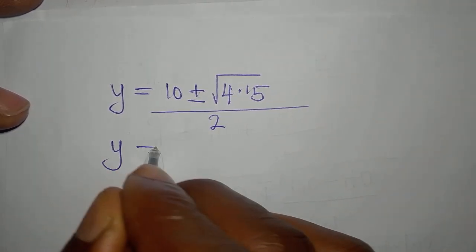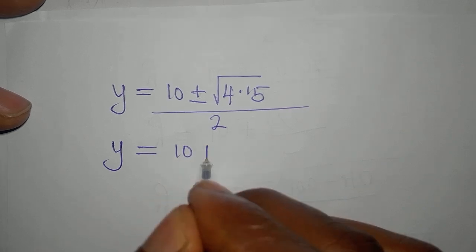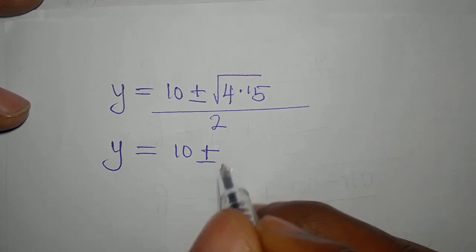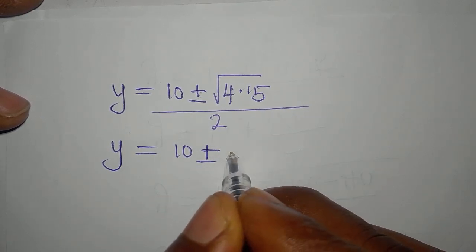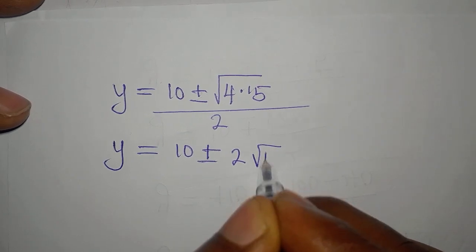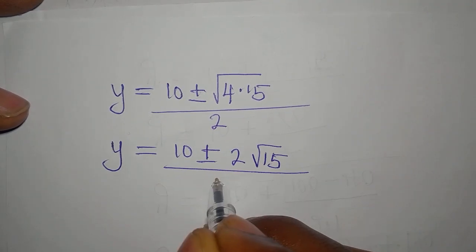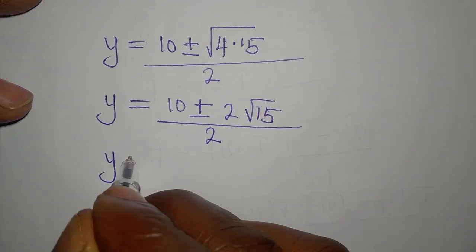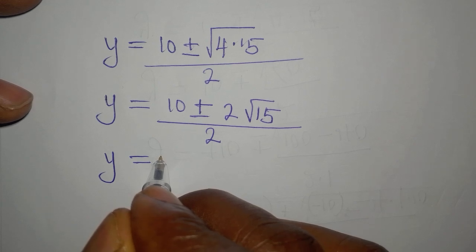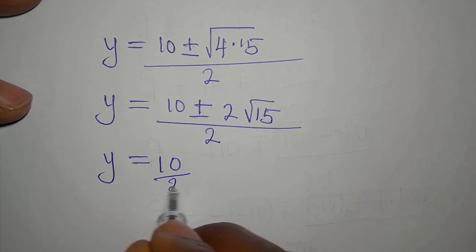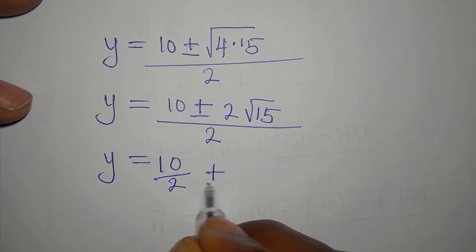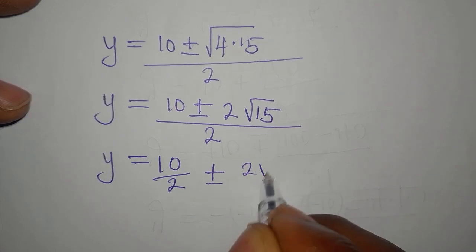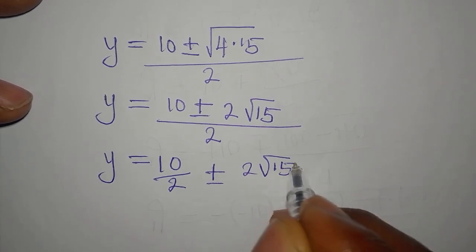So y will now be 10 plus or minus, square root of 4 is 2, then we have square root of 15, as we divide this by 2.